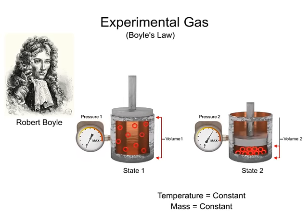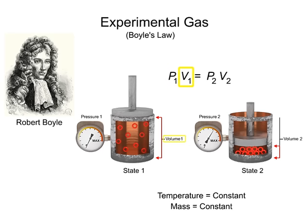Boyle's Law can be expressed mathematically as the pressure at state 1 times the volume at state 1 is equal to the pressure at state 2 times the volume at state 2. This is true as long as both the temperature and mass, or amount of gas, remains constant.